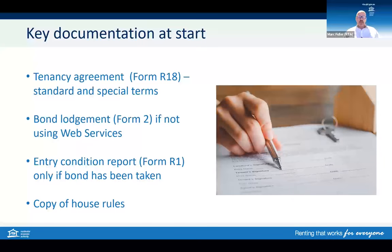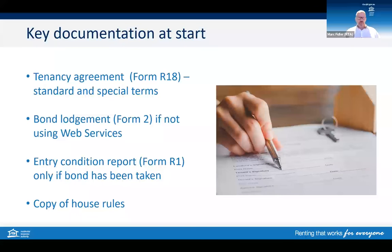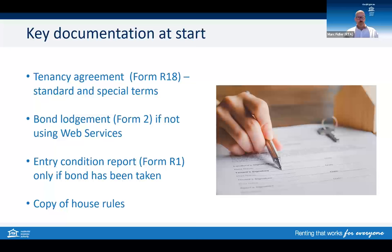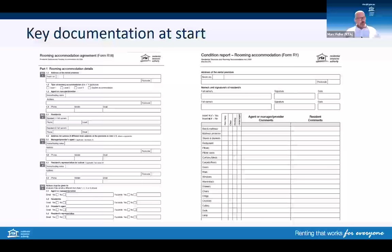At the start of the tenancy there are effectively three forms required. You've got your rooming accommodation agreement — this includes standard terms and potentially any special terms. A copy of the agreement must be provided to the resident prior to them committing to the tenancy or paying anything in relation to it. The agreement should be filled out in full, except potentially for the name and the start and end date. If you are taking a bond, you need to provide an entry condition report, and the bond lodgement form must also be submitted to us.